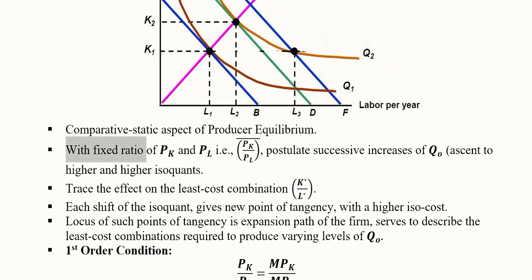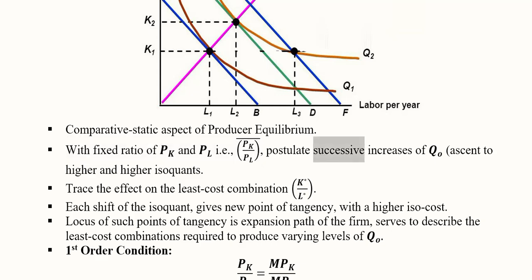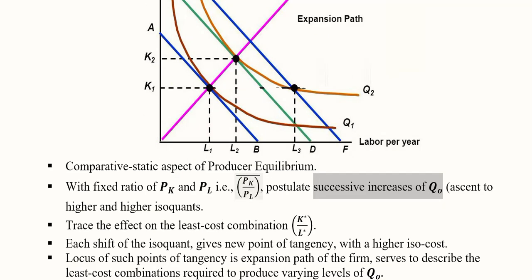With fixed ratio of PK and PL, we already have seen this demonstrated, that the ratio of these two points and the other two points and so on will be the same. And that depicts that the postulate successive increases of Q ascent to higher and higher isoquants. So as we go to higher isoquants, for example Q1, Q2, and somewhere here will be Q3 and Q4, it will show the same ratio of capital and labor. A slight difference should be noted that here the ratio is not just of capital and labor, it is also of the price of capital and price of labor.